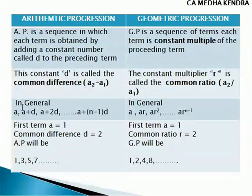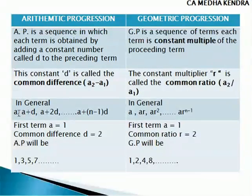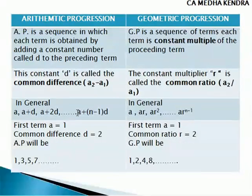The general format of arithmetic progression is A, A plus D, A plus 2D, and so on. We add the common difference to the preceding term: A, then A plus D, then A plus 2D, and it goes on up to A plus (N minus 1) into D.